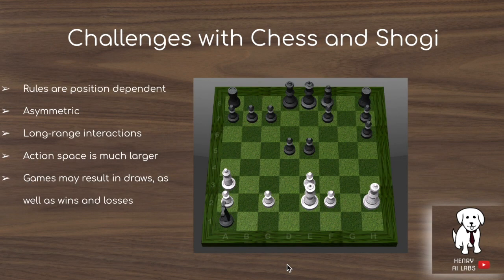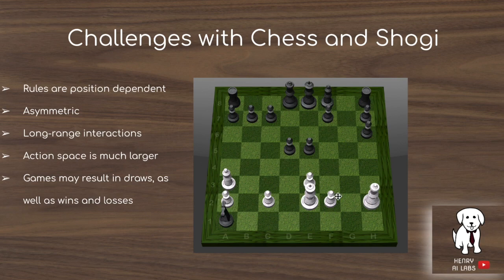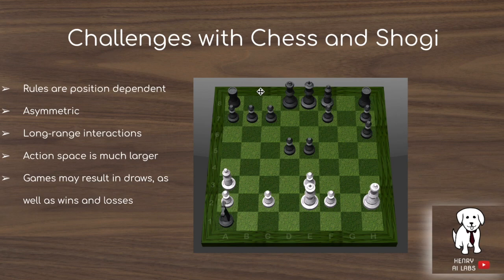There are many new challenges when scaling from Go to chess and shogi. The rules are position-dependent — for example, a pawn can only move diagonally if there's a piece to capture. The board is asymmetric, so you can't flip it due to the orientation of the king and queen. There are also long-range interactions, like the queen moving from one corner to the other, which makes local convolutional filters less effective. It might be interesting to use self-attention layers here, similar to transformer-like architectures seen in OpenAI's hide-and-seek agents.